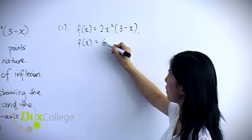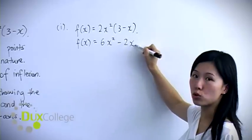So you will expand your brackets, then you will have 6x² - 2x³.